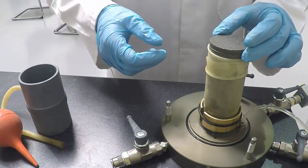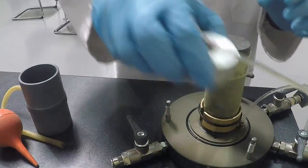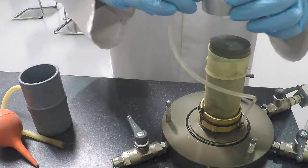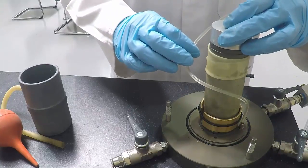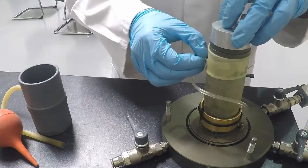Place the saturated porous disc on the specimen and the top cap on top. Twist the top cap to avoid the drainage lead getting trapped when positioning the top half of the triaxial cell.